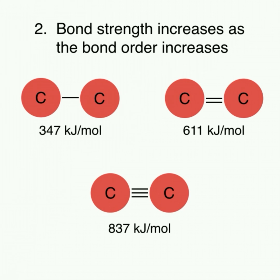The carbons with only a single bond have the lowest bond dissociation energy, and thus, weakest bond strength, while the carbons with a triple bond have the greatest bond dissociation energy and greatest bond strength.